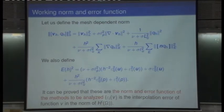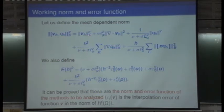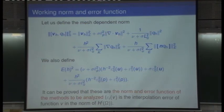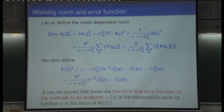We proved that the method is stable and optimally convergent in this norm. The norm includes: viscosity times the gradient of v_h squared plus sigma times v_h squared — this is the graph norm of the Brinkman operator — plus a term giving control on the divergence of the velocity, plus the length scale L_p times the L2 norm of the pressure, and something that may give control on the H1 norm of the pressure, plus control on the jumps.